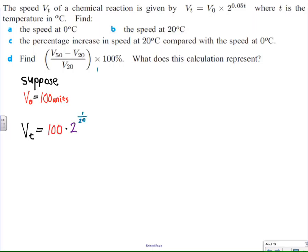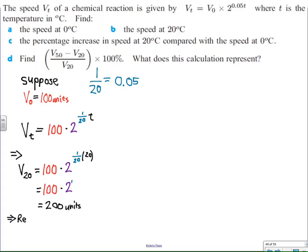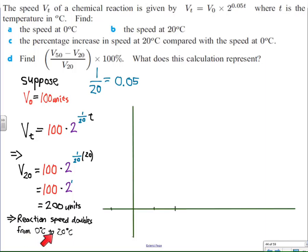and instead of saying v naught, I'm just going to say 100 units. So my equation now becomes 100 times 2 to the 1/20 t. Notice in here that 1/20 is just another form of 0.05. It's 5 out of 100, or 1 out of 20. So that means that v sub 20 is just going to be 200 units, because 20 times 1/20 is 1, so we just double 100. In other words,